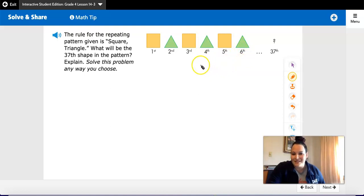The odd numbers are not 2, 4, 6. The odd numbers are 1, 3, and 5. And since these odd numbers are all squares and this is an odd number, I know that a square is going to be in the 37th place.